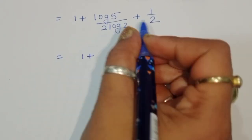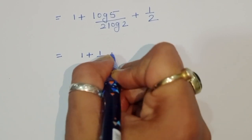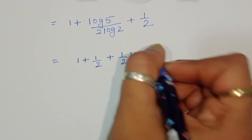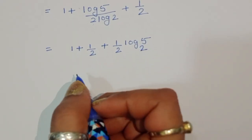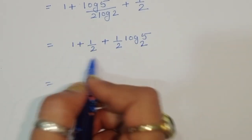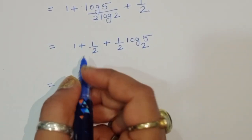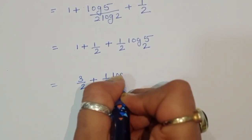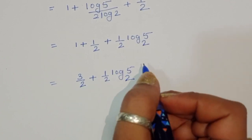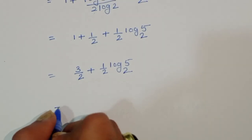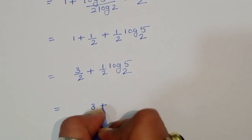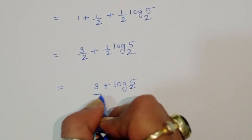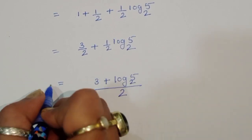We can write this as 1 plus 1 over 2, plus one-half times log of 5 to the base 2. Taking the LCM of 1 and one-half gives 3 over 2, so x equals 3 over 2 plus one-half times log base 2 of 5. This simplifies to x equals 3 plus log base 2 of 5, all divided by 2. This is the value of x.